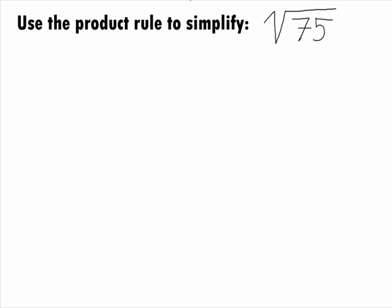In this example, we want to use the Product Rule for Radicals to simplify the square root of 75. Basically, we are going in the opposite direction with this rule than in Examples 6 and 7.